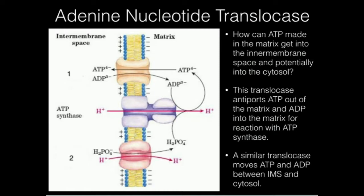If we go back to look at ATP synthase's structure, the part that actually makes ATP — the beta and alpha subunits — those are right here in the mitochondrial matrix. They're not actually part of the membrane. So the question is: how do I get ADP and phosphate in there?